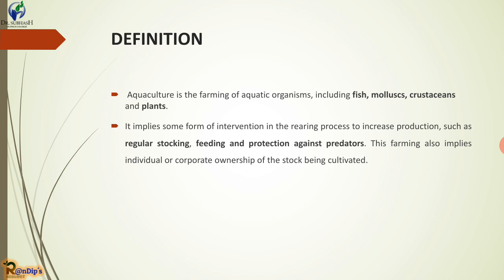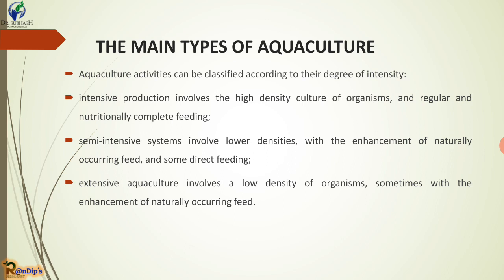Aquaculture implies the rearing of some invertebrates and other organisms to increase production through regular stocking, feeding, and protection against predators. The farming also implies individual or corporate ownership of the stock being cultivated. Different types of aquaculture involve regular stocking of ponds, feeding mechanisms, and protection against predators.